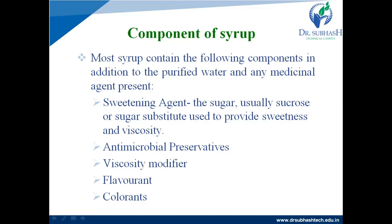Next is the viscosity modifier. The function of the viscosity modifier is to enhance the viscosity. Next is the flavorant. Most syrups are flavored with naturally occurring material or synthetic flavorants. An example of a naturally occurring material is volatile oil, such as orange oil. An example of a synthetic flavorant is vanillin. The purpose of the flavorant is to render the syrup a pleasant taste.